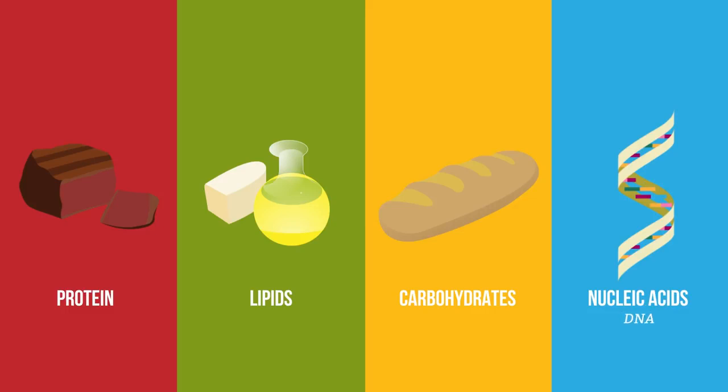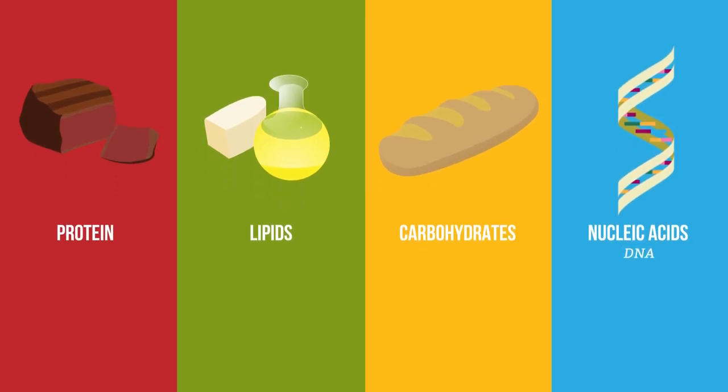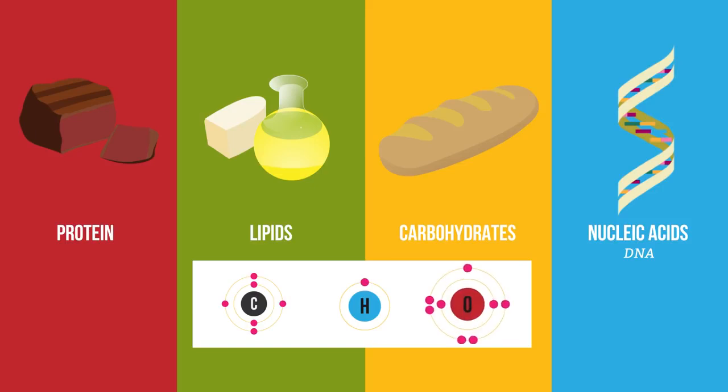So what are these all made of? Well, carbohydrates and lipids are really simple. They just contain three elements: carbon, hydrogen and oxygen.